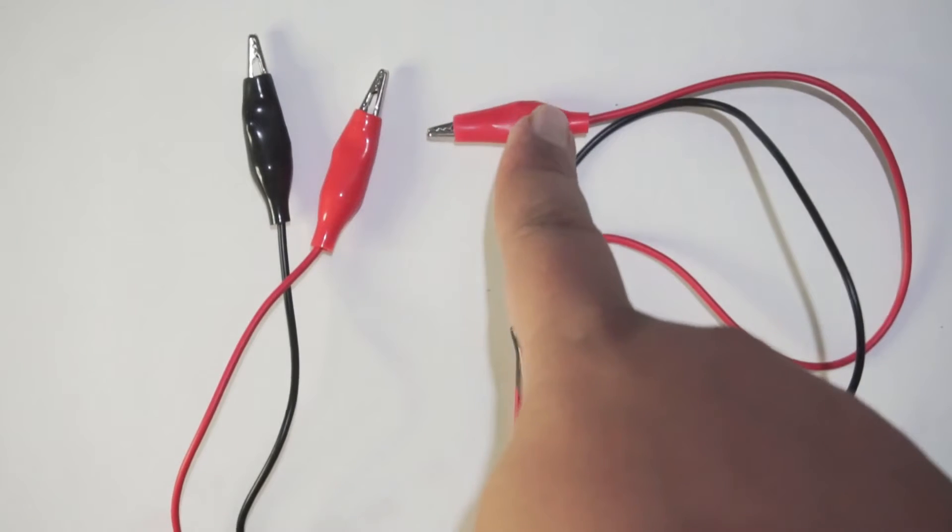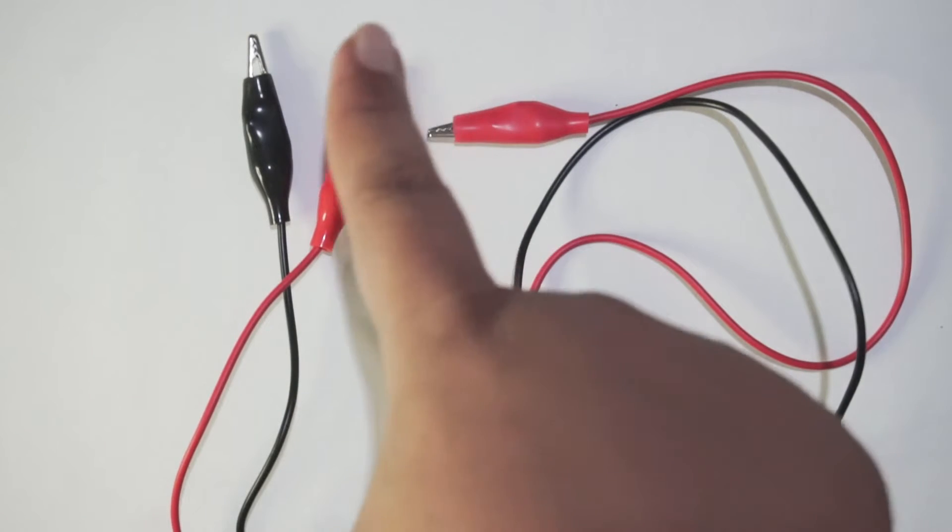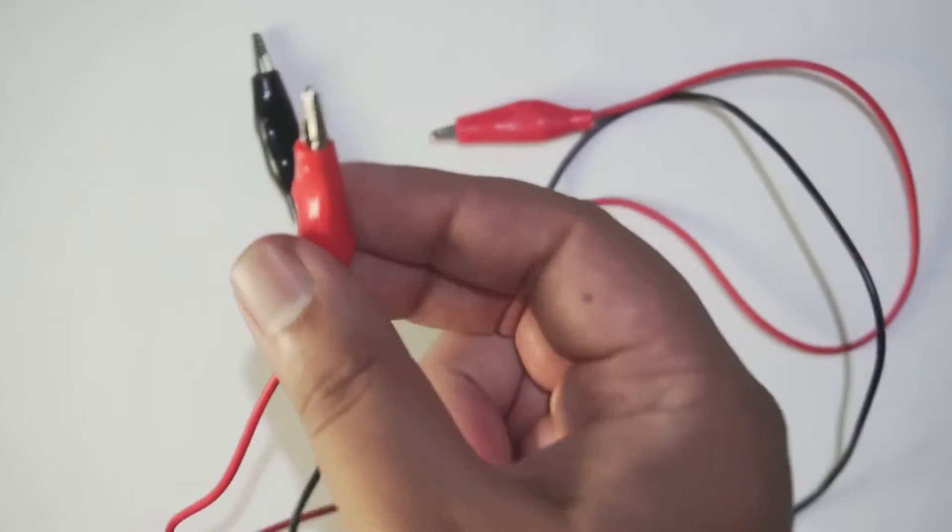So in this case, it is a double ended alligator clip. This means that on both ends of the wire, we have alligator clips like this.